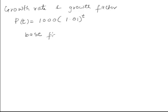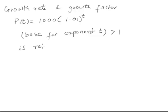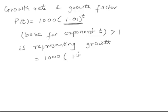Generally, if this value inside the bracket — the base for the exponent T — is greater than 1, then we say this is a question of growth, or the population is growing. This base is called the growth factor. Now this growth factor is nothing but the summation of 1 plus something; here 1 plus 0.01 raised to T.